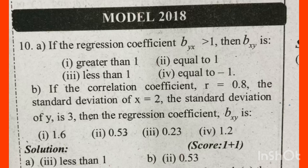If the correlation coefficient r is equal to 0.8, the standard deviation of x is equal to 2, and the standard deviation of y is equal to 3, then the regression coefficient bxy is dash. The answer is 0.53.